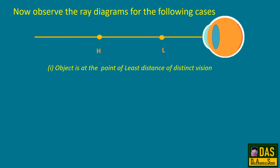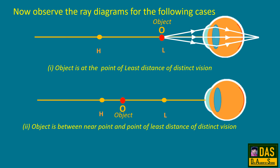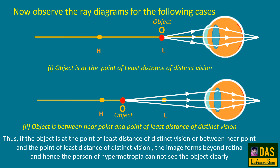When the object is at the point of least distance of distinct vision, the rays coming from the object refract at the eye lens and form an image beyond the retina. When the object is between the near point and the point of least distance of distinct vision, the rays again refract through the eye lens and form an image beyond the retina. Thus, in both these cases, the image forms beyond the retina and the person with hypermetropia cannot see clearly.